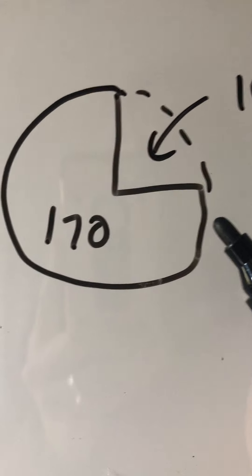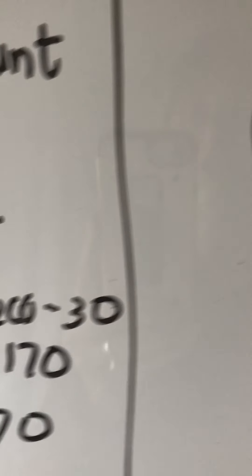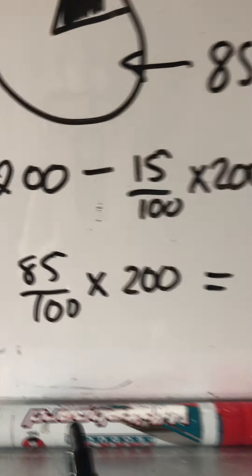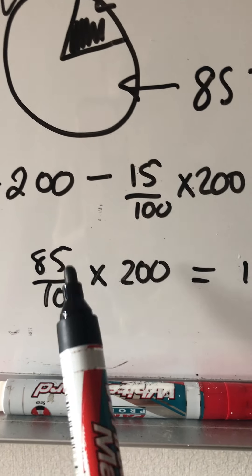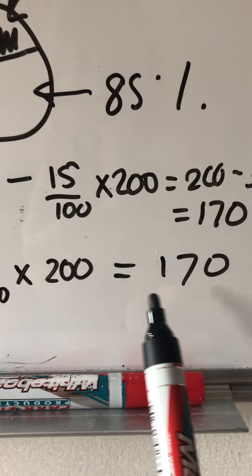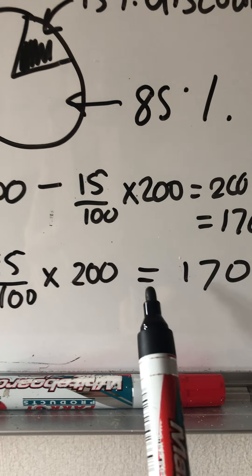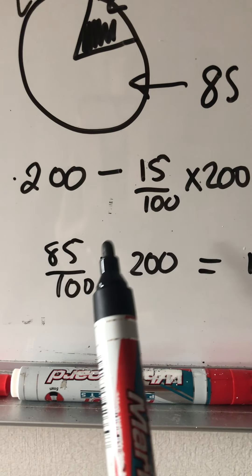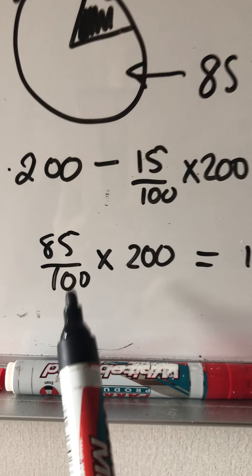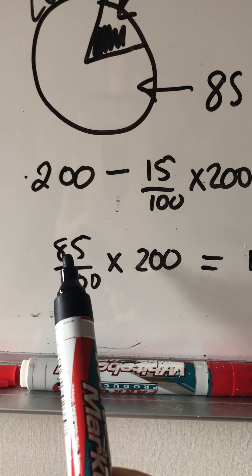So then what do you do? The key is to think about this. When we get a discount of 15%, we pay 85%. So actually, we can take 170 and we can times by 100 and divide by 85.